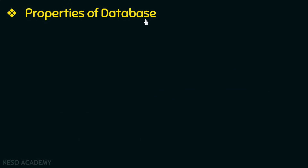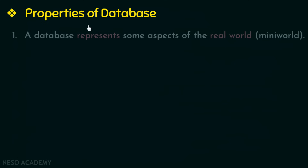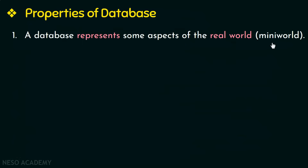Next we will be discussing the properties of database. There are three properties. The first one is that a database represents some aspects of the real world, otherwise called as the mini world. Anything in this mini world — the objects, their properties, the relationships between them — is represented by a database. And if there is any change in the real world, that change will also be reflected in the database.